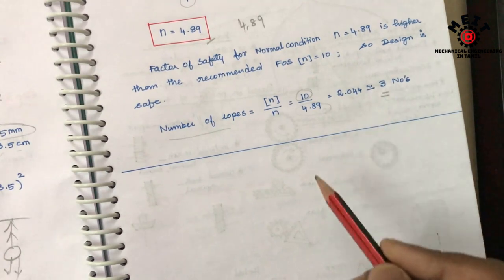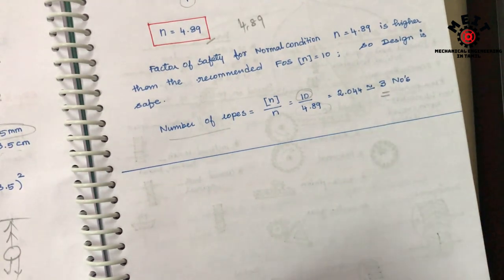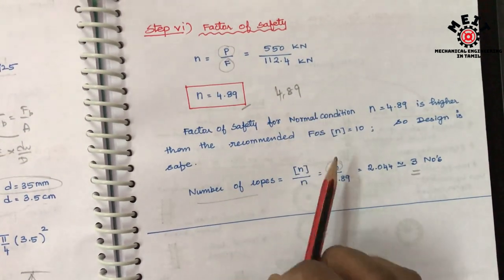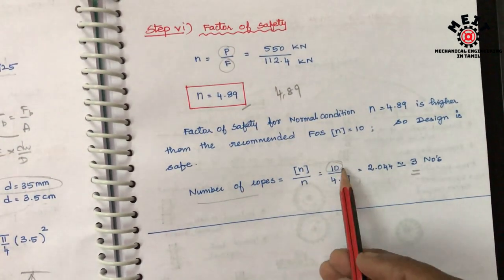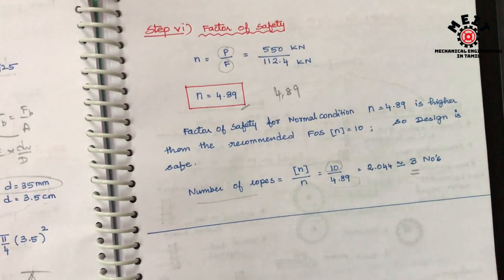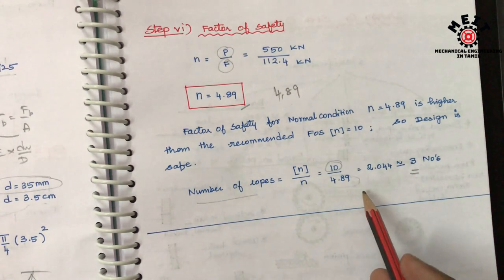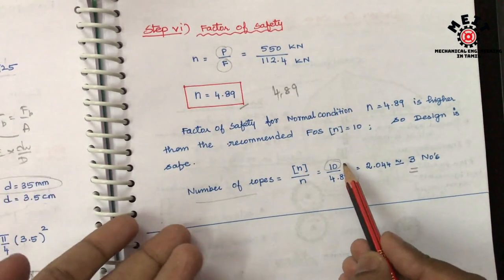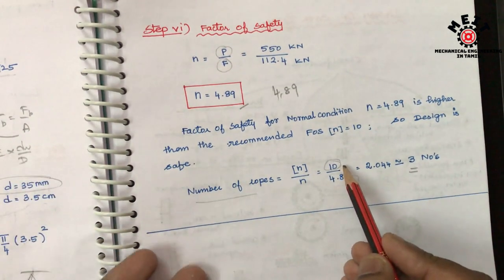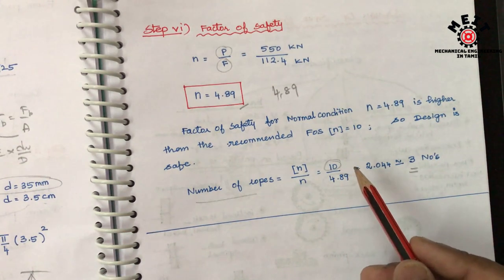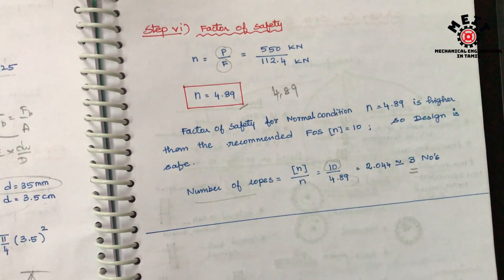Approximately 3 ropes are used on the object. One rope gives a factor of safety of about 4.89. If additional factor of safety is needed, multiple ropes can be used. That's it. Thank you.